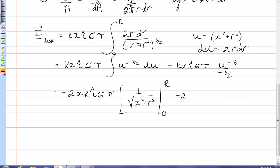Substituting in for r, I get 1 over the root of x squared plus capital R squared, subbing in for 0, and I get 1 over x.